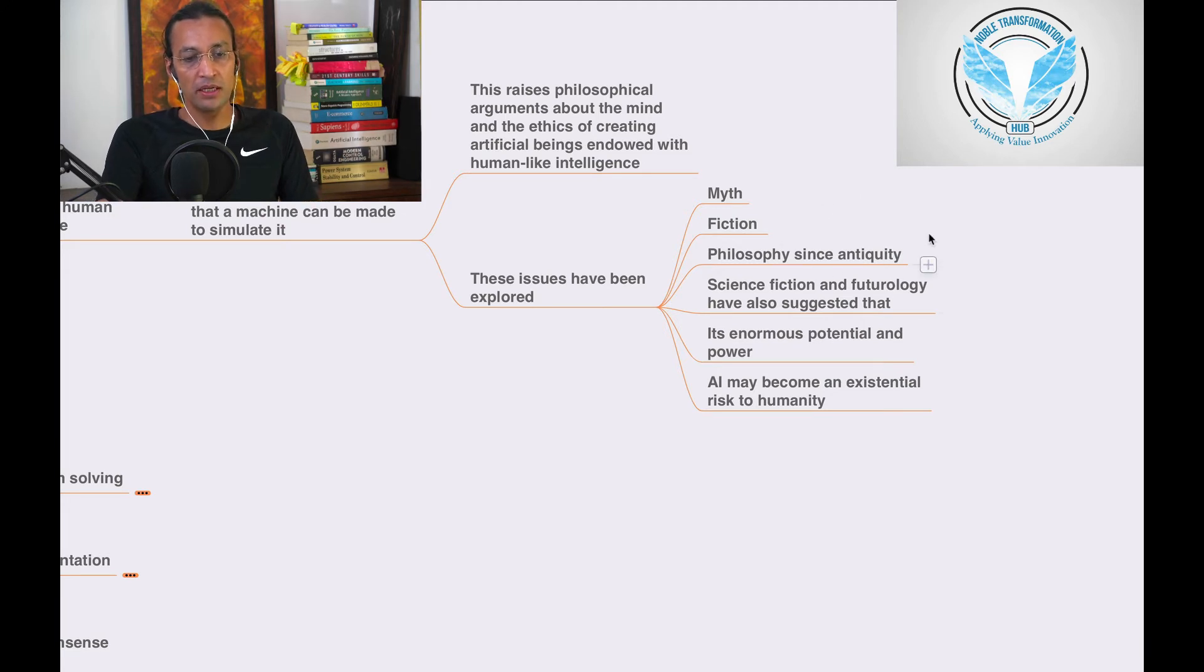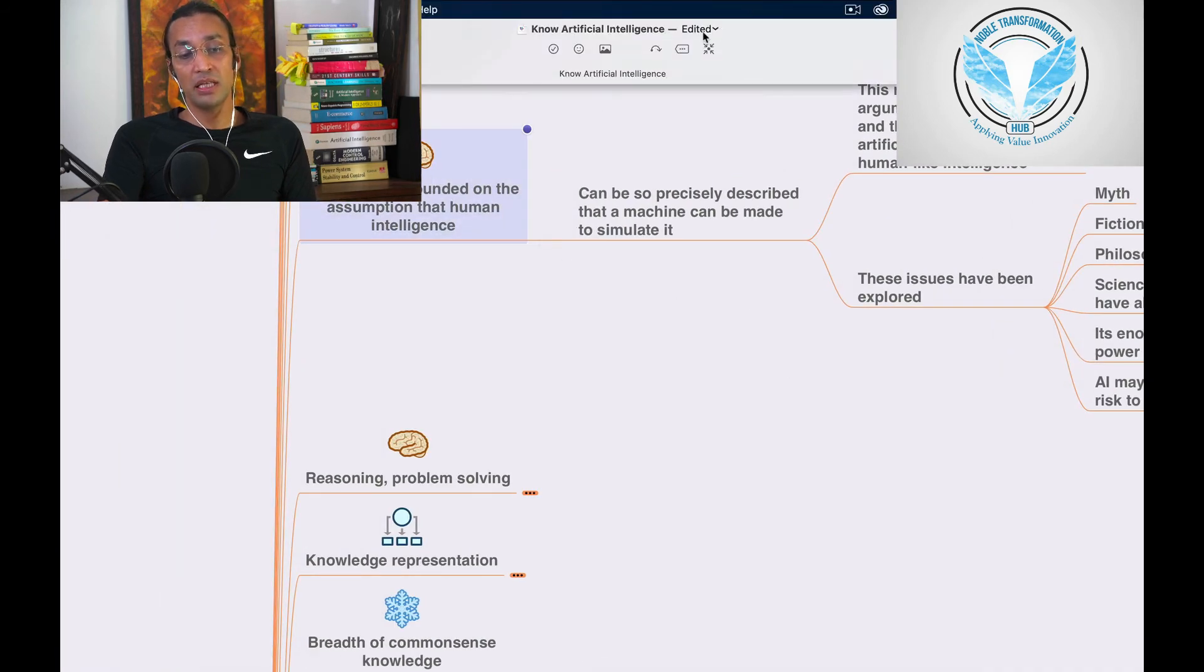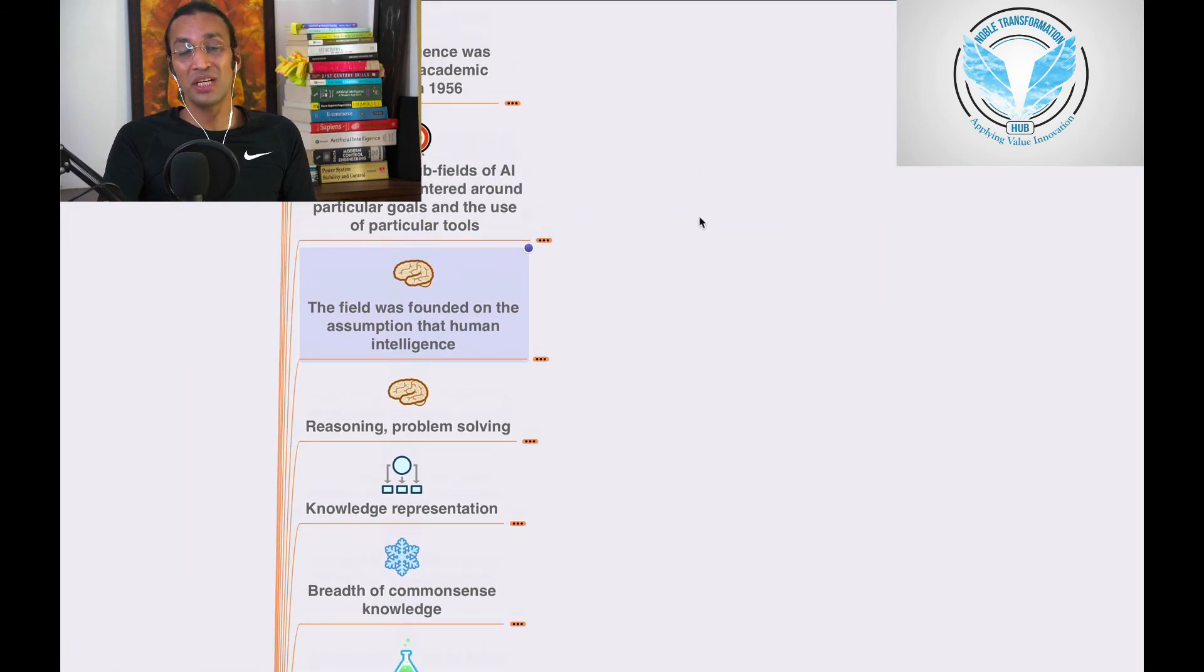Philosophy since antiquity, science fiction, and futurology have suggested there are a lot of issues, potential, and existential risks. AI may become an existential risk to humanity. It will learn how humans behave and potentially take control.